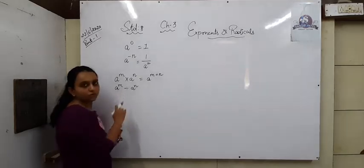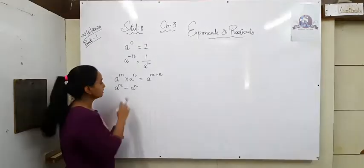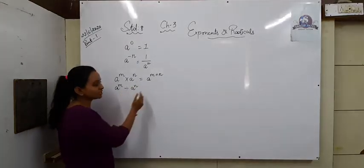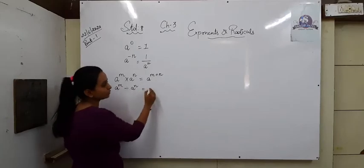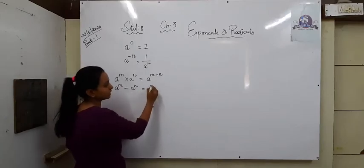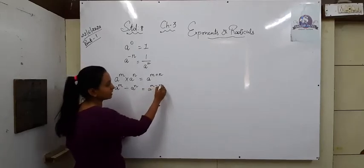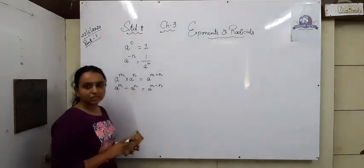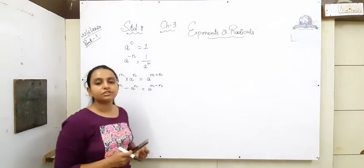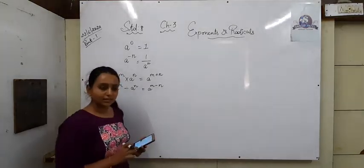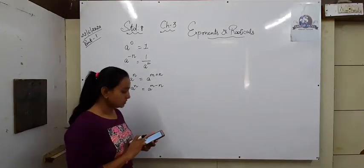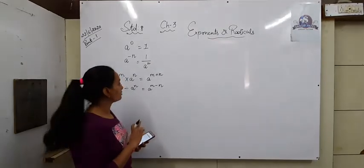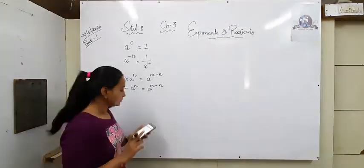Then A raised to m divided by A raised to n. When there is division between them — numbers same, powers different — it becomes A raised to m minus n. So whenever there is a multiplication sign, powers are added. But whenever a division sign comes, powers are subtracted.